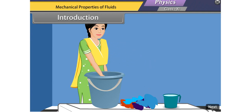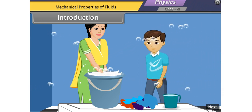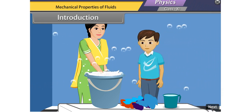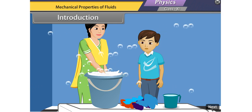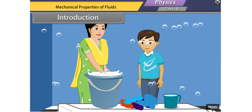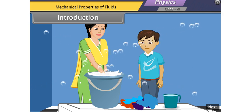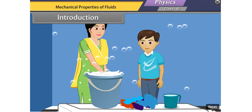Ravi's mother is pouring detergent powder into a water bucket and shaking it well by hand. Due to this, they have produced a lot of soap bubbles coming out from the bucket. Ravi, watching this curiously, asked his mother why soap bubbles are stable while water bubbles are not. His mother replied that it happened due to surface tension — when detergent is added to water, the surface tension is decreased, and hence a lot of stable bubbles are produced.